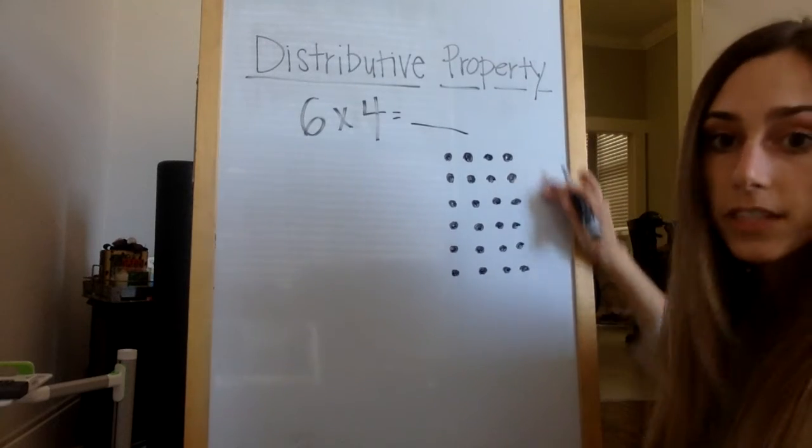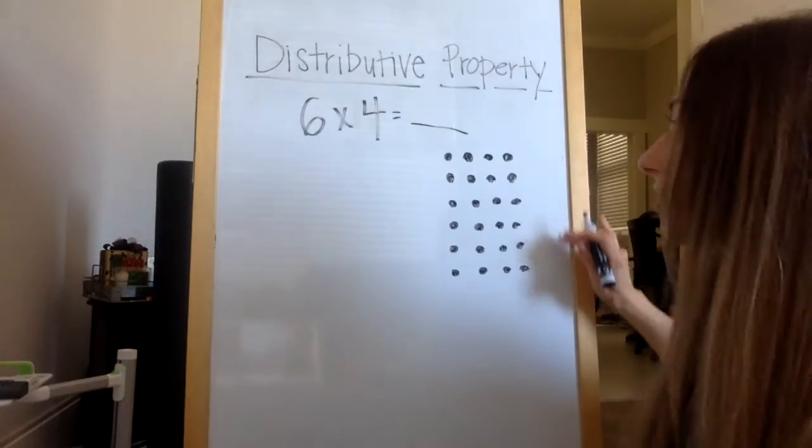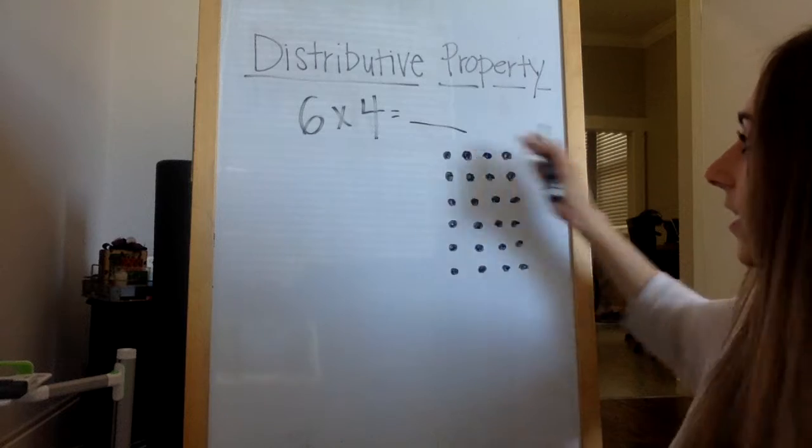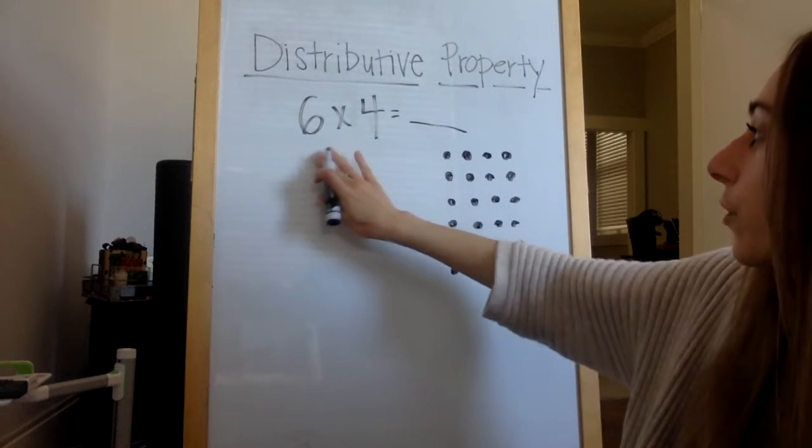Okay, so here I have six rows of four. We know that's another way to show six times four. Six rows of four or six groups of four.